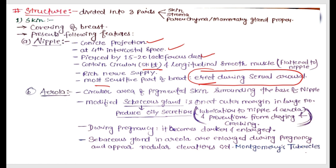Next is the areola. The areola is a circular pigmented area which surrounds the base of the nipple. The areola is a modified sebaceous gland. Sebaceous glands are present at the margins of the areola. They produce oily secretions which help to lubricate the nipple and areola, preventing them from drying and cracking.